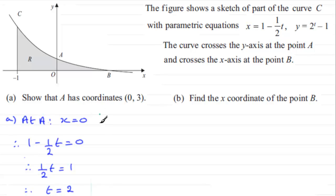Now all we've got to do is say that when t equals 2 we can find out what y is. When t equals 2 therefore we have y equals 2 to the power t, 2 to the power 2 in other words then minus 1. So we've got 4 take away 1 which is 3. So therefore our coordinates for A are 0,3 as we had to show.